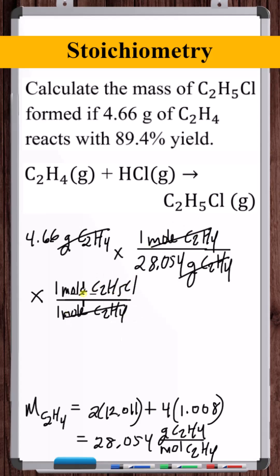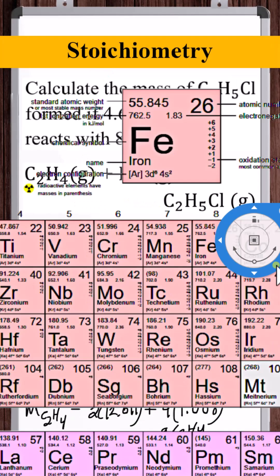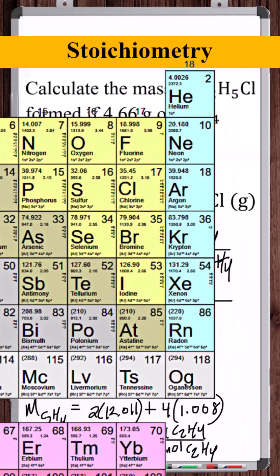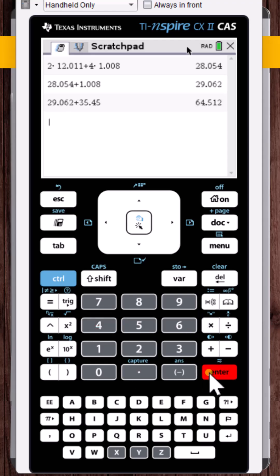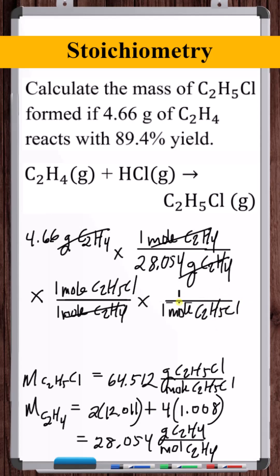Now we just need to convert from moles of ethyl chloride to grams of ethyl chloride. We have C2H5 — we add an extra hydrogen and then a chlorine. Adding 1.008 and the molar mass of chlorine, 35.45, gives us 64.512 grams per mole of ethyl chloride. Multiplying this out gives the grams of ethyl chloride produced stoichiometrically from 4.66 grams of ethylene.